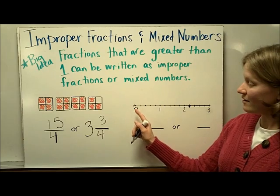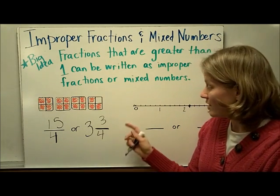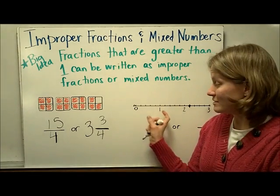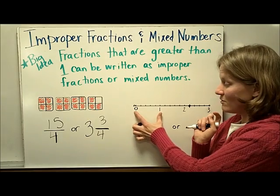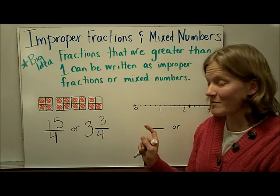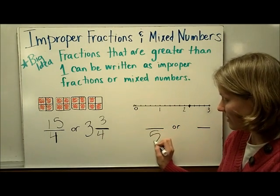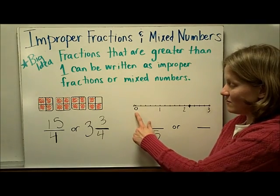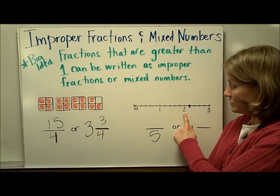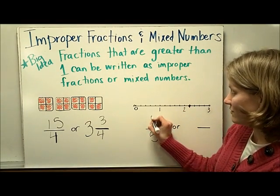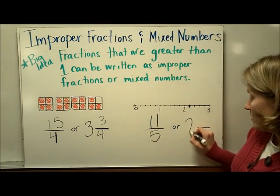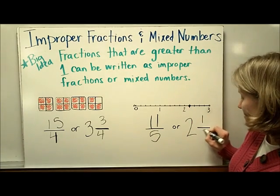On a number line we can also find an improper fraction or a mixed number. The first thing you have to do when reading a number line and determining the fraction is figure out how many pieces the 1 whole is broken into. From 0 to 1 is 1 whole and there are 1, 2, 3, 4, 5 sections between there, so that means that this number line is broken up into fifths. This would be 5 fifths to the 1 whole, 10 fifths to the 2 wholes, and then 1 more would be 11 fifths, which is equal to 2 wholes and just 1 fifth past 2 wholes.